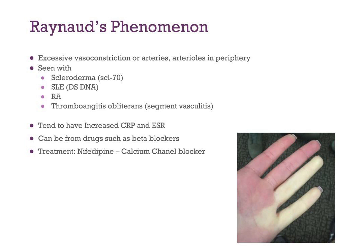Raynaud's Phenomenon is caused by excessive vasoconstriction of arteries and arterioles in the periphery. You'll see pallor in the digits. It is seen in scleroderma (autoantibodies to SCL-70), lupus (autoantibodies to DNA), rheumatoid arthritis, and Thromboangiitis Obliterans from smoking. Labs show elevated CRP and ESR. It can be a side effect of beta-blockers. The drug of choice for treatment is nifedipine, a calcium channel blocker.